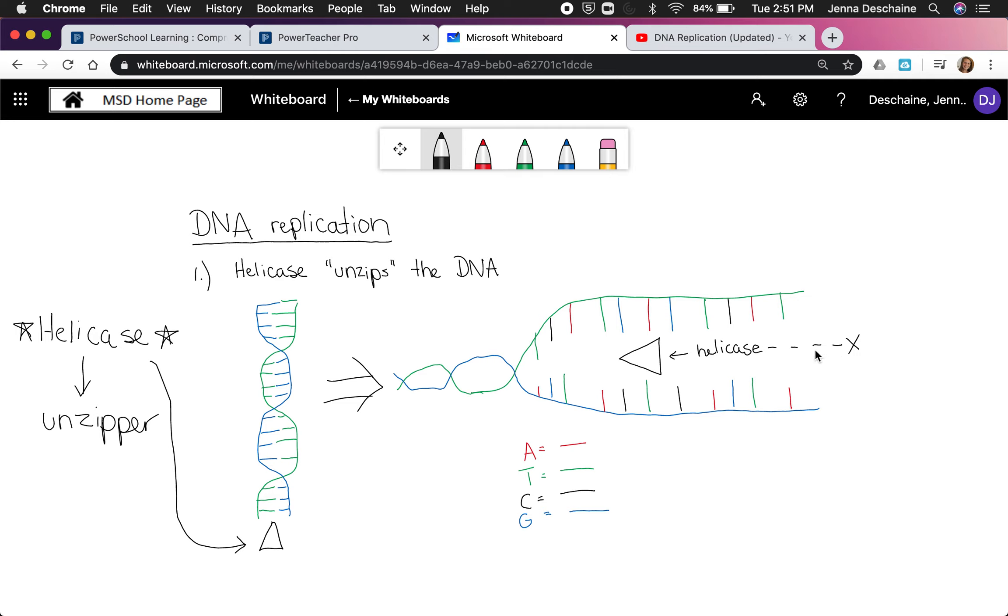Helicase starts to go through and unwind that DNA. We have our two separate strands right here: a green strand and a blue strand down below. Helicase will continue to unzip this DNA, but I'm just going to show you a small portion of it. Just know that it'll keep on going until the whole thing has been replicated. That is the very first step of DNA replication: helicase unzips the DNA.